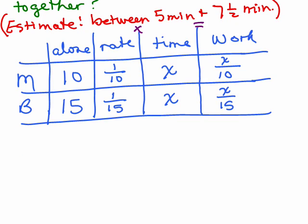And what we want to know is if they each work that amount of time, they get the job done. So the amount of work Mary gets done, which is x over 10, plus the amount of work that Beth gets done, x over 15, equals 1 full job.